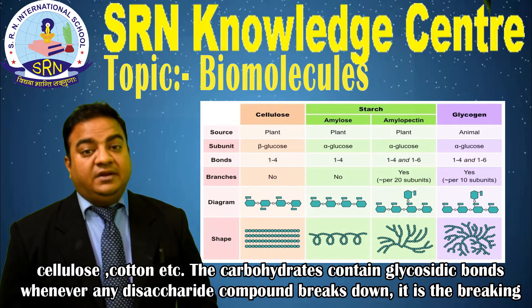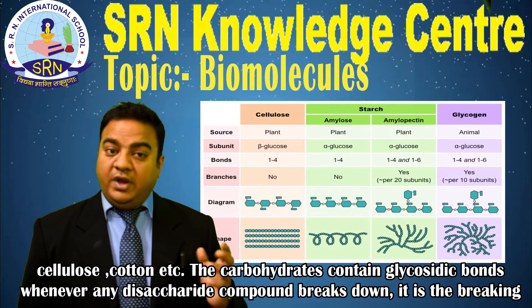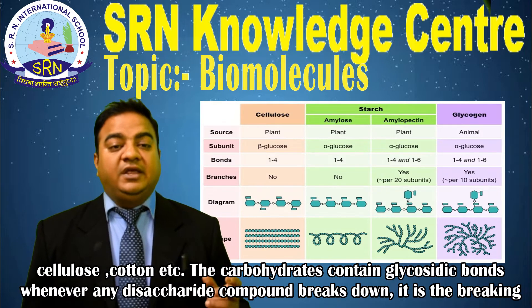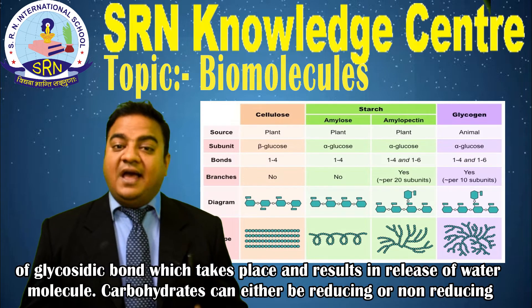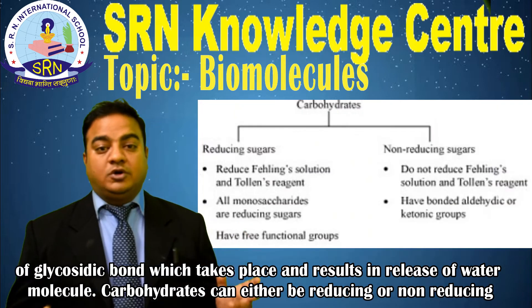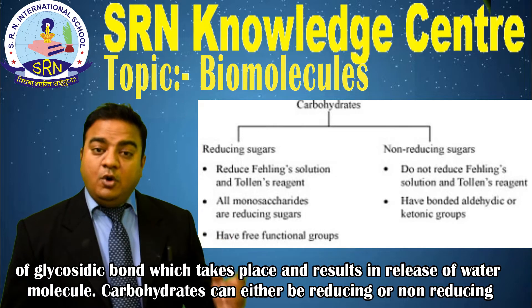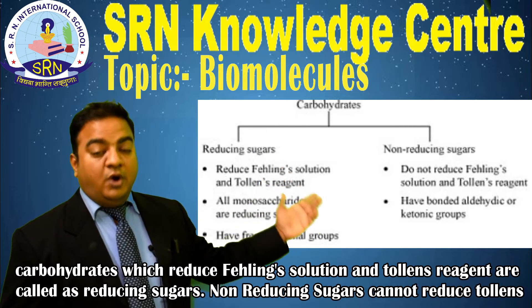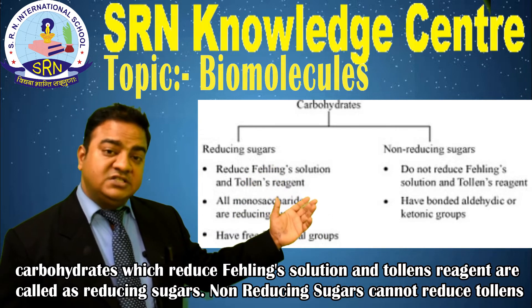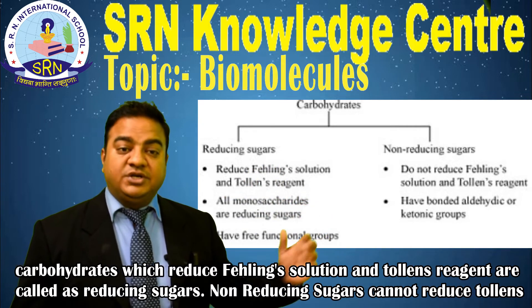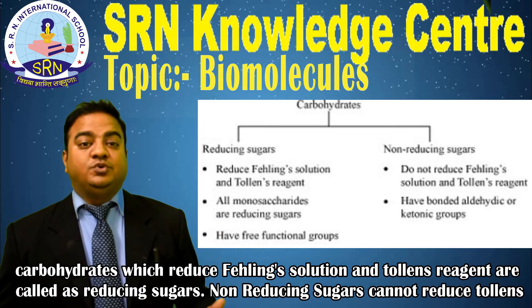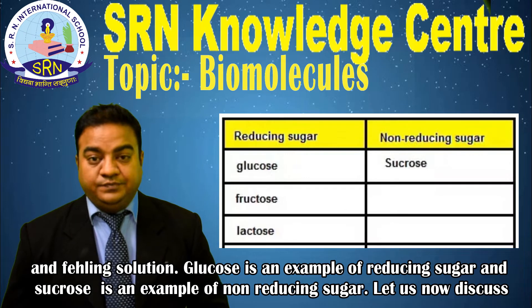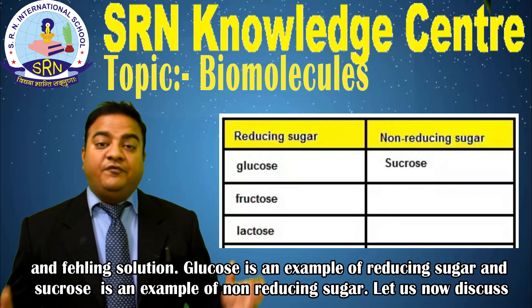Carbohydrates contain glycosidic bonds. Whenever any disaccharide compound breaks down, it is the breaking of glycosidic bonds that takes place, resulting in the release of a water molecule. Carbohydrates can either be reducing or non-reducing. Carbohydrates which reduce Fehling's solution and Tollens' reagent are called reducing sugars, while non-reducing sugars cannot reduce Tollens' or Fehling's solution.